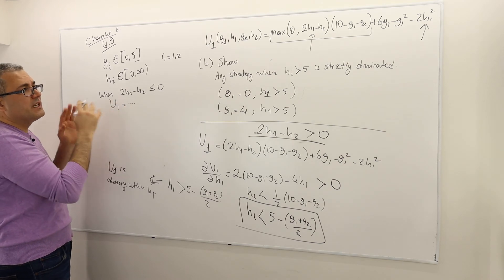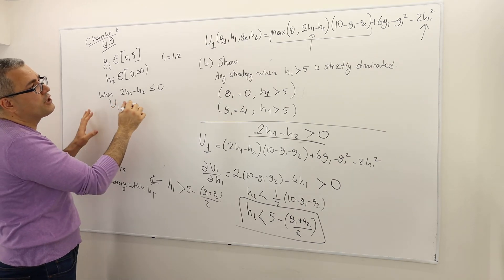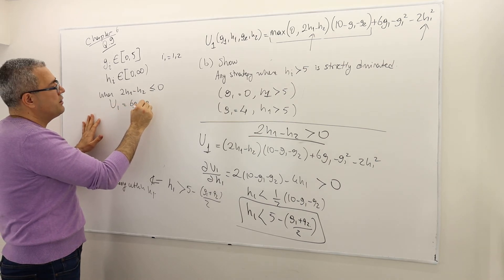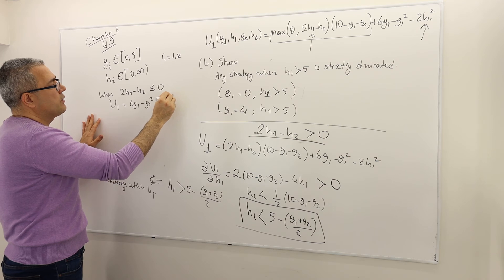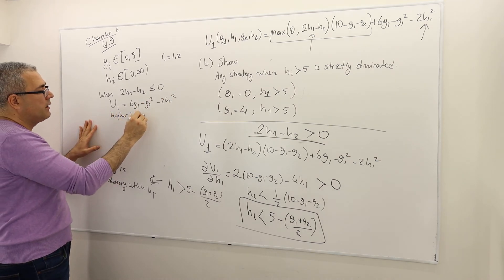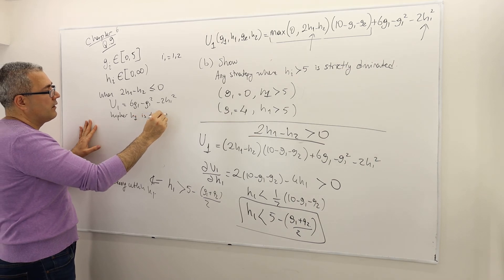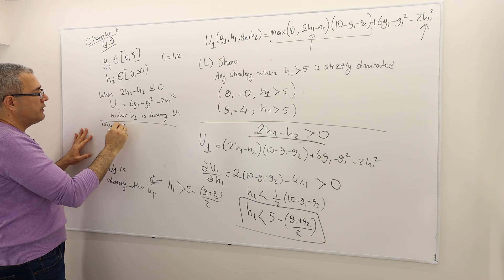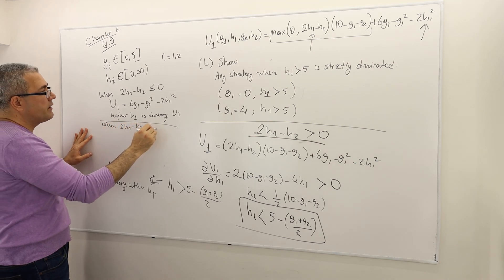I'm sorry, H. Let me just write it. It's 6G1 minus G1 squared minus 2H1 squared. Anyway, that means higher H1 is decreasing U1. Well, however, when 2H1 minus H2 greater than 0, I just figured out that I'm not going to rewrite U1. But the thing is,